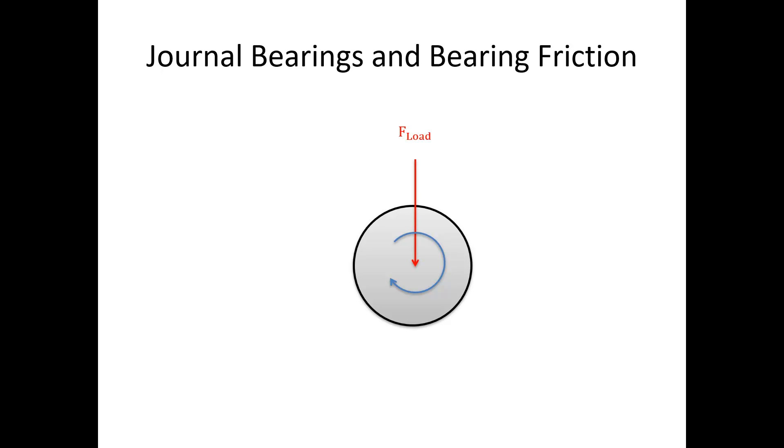Number one, we would have the load force. For our train example, this is the force of the train pushing down on the axle. Generally where we want to use journal or plane bearings, these are going to be pretty large loads. We're also going to have a normal force, the supporting force from our bearing. And we are going to have some sort of friction force.